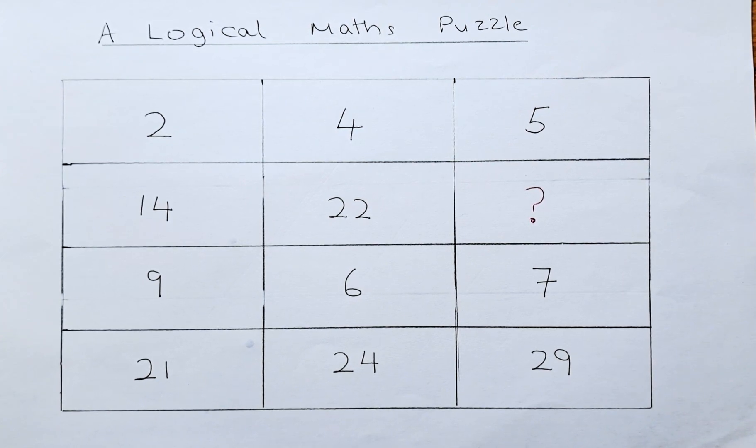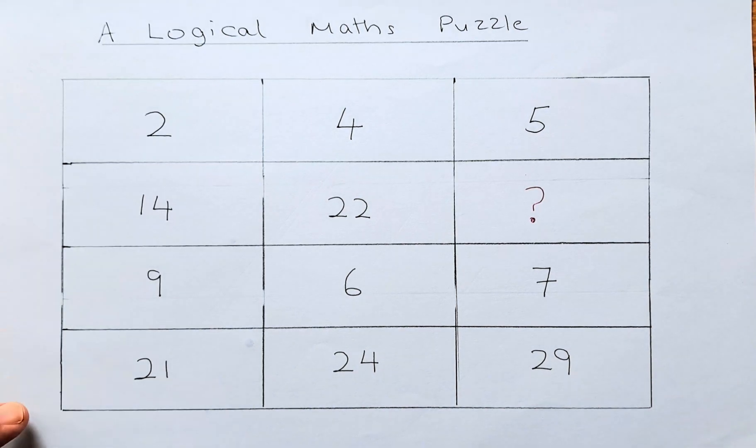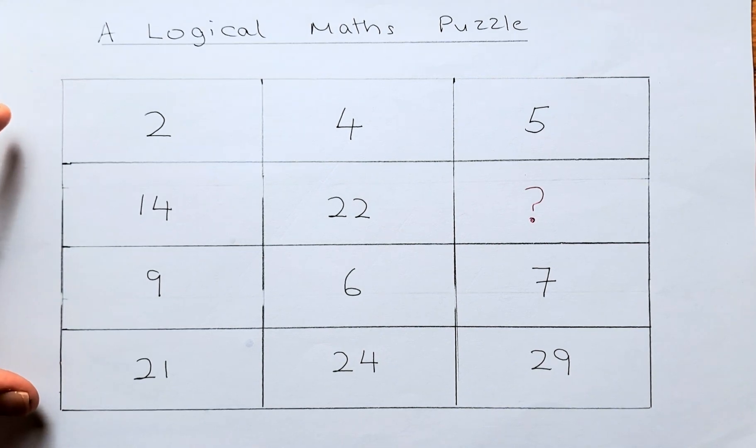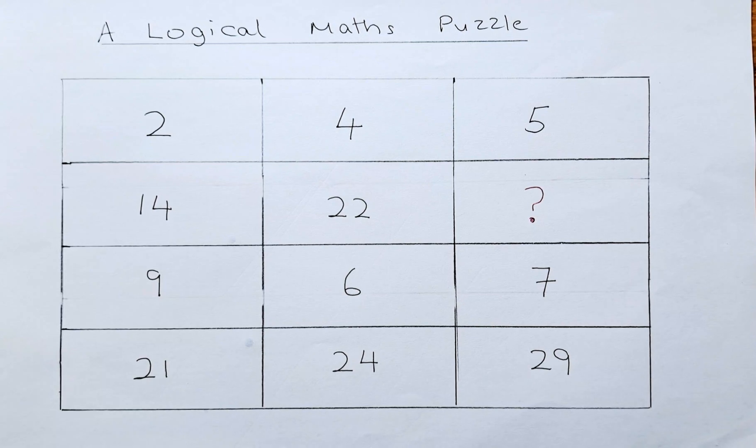This is what I mean. 2 plus 21 is equal to 14 plus 9, because this adds up to 23, this adds up to 23. Similarly, 22 and 6 will add up to 28, 28 is equal to 24 plus 4. So 28 is equal to 28.